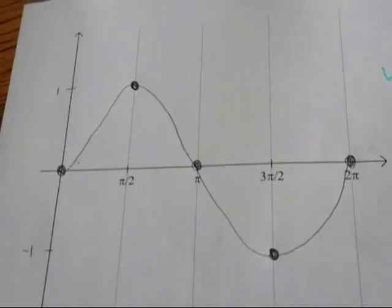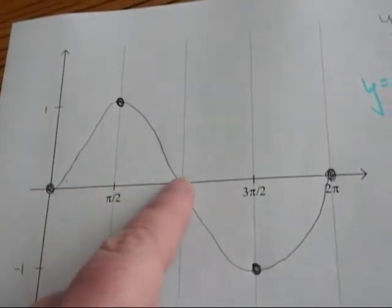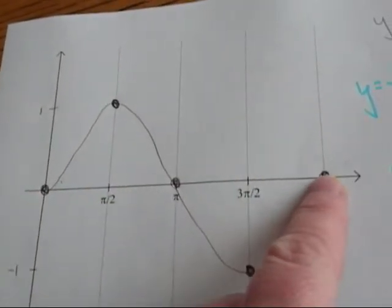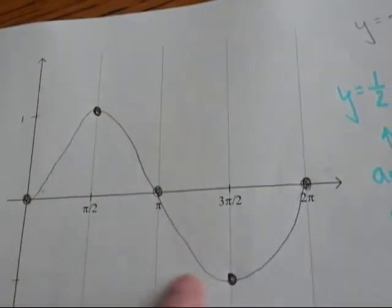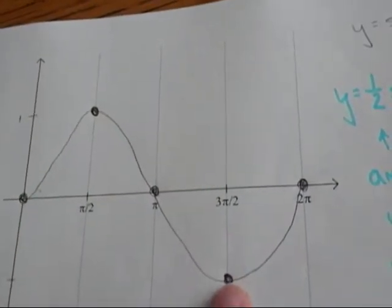So again, my parent function had zeros at zero, pi, two pi, a maximum at pi over two, and a minimum at three pi over two.